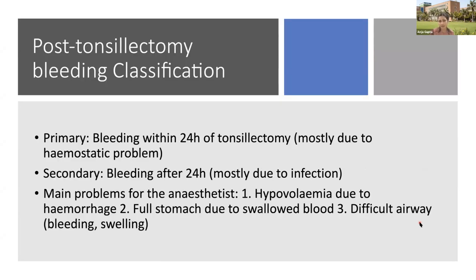Post-tonsillectomy bleeding is commonly asked in postgraduate examinations. There are various types: primary hemorrhage is bleeding within 24 hours of tonsillectomy, the most common type, generally related to hemostatic problems and venous hemorrhage. Secondary hemorrhage is bleeding after 24 hours, mostly related to infection of the tonsillar bed.